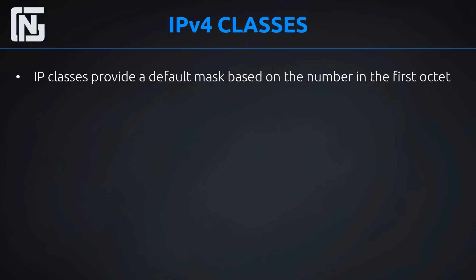So what is a class? IP classes provide a default mask based on the number you see in the first octet. Just by the number in the IP address or the network, you can tell what the class is and what the default mask is. This system was used before subnetting existed — right when IPv4 was released. They soon figured out that wasn't going to be enough network IDs, so subnetting came in. We'll discuss subnetting in another lesson, but this is the way it started, just with classes.